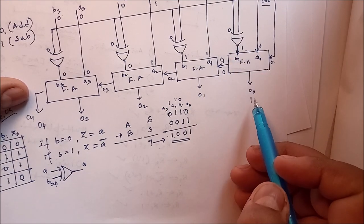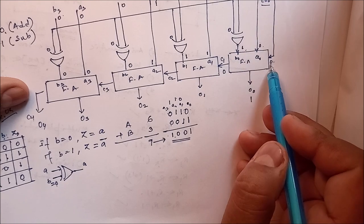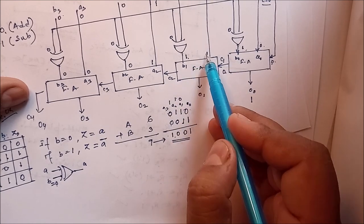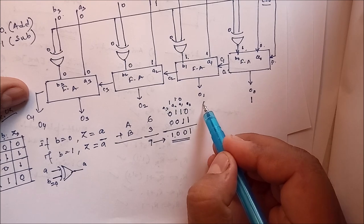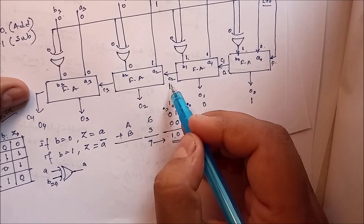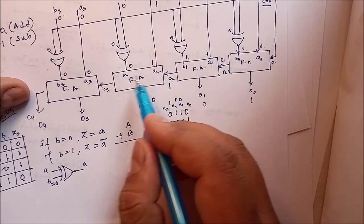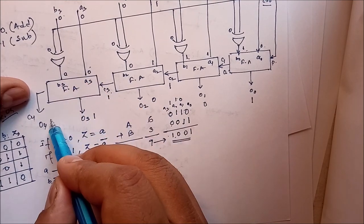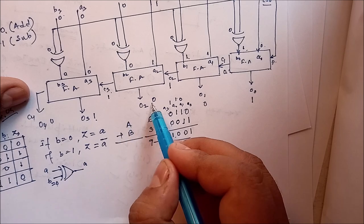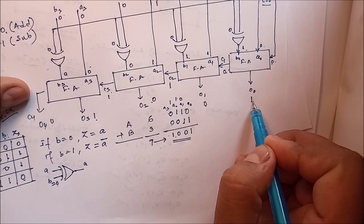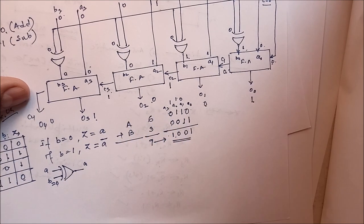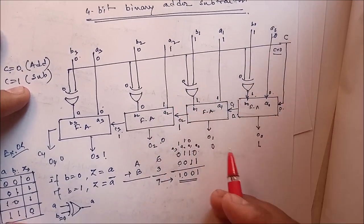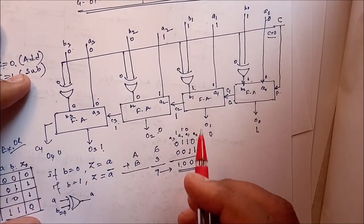Let's verify: 0 plus 0 is 0. 1 plus 0 plus 0 is 1, carry 0. 1 plus 1 plus 0, summation is 0, carry 1. 1 plus 1, summation is 0, carry 1. 0 plus 0 plus 1, summation is 1, carry 0. So the answer is 1, 0, 0, 1. If c is equal to 0, it is working as the adder circuit.